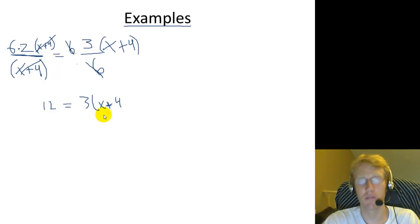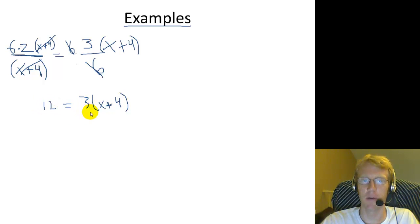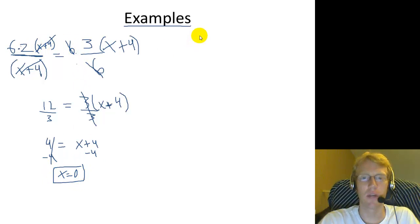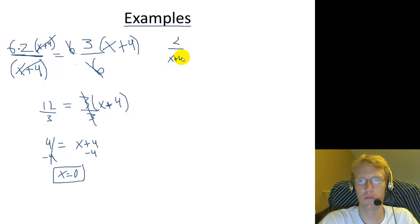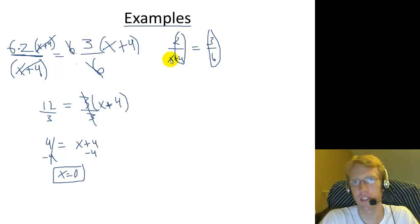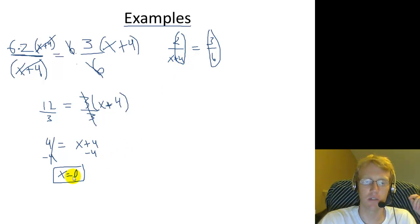And now from here, you have a lot of different options. You could distribute the 3 inside, or you could divide both sides by 3. Since this number over here is divisible by 3, I think dividing by 3 is the easier choice. So we have 4 equals x plus 4. And then we could subtract 4, and you can immediately see that we're going to have x equals 0. So let's go back and look at our original problem and see if that makes sense. We had 2 over x plus 4 equals 3 over 6. Well, 3 over 6 is 1 half. And 2 over 4 is 1 half. So this x right here, we wanted it to not count for anything. Otherwise, it would throw this off. So x equals 0 is a good answer.